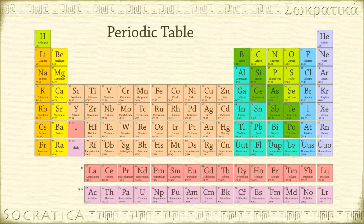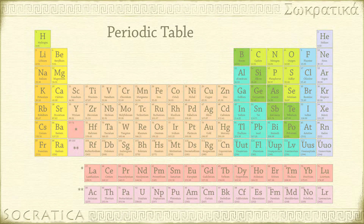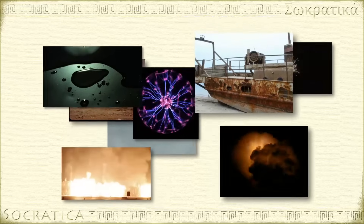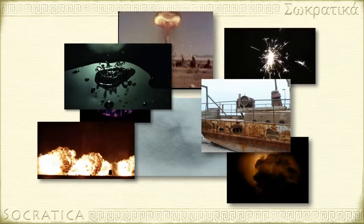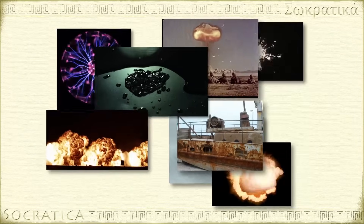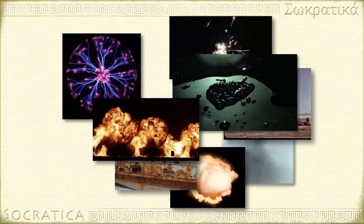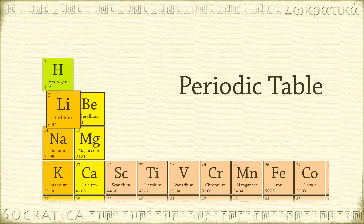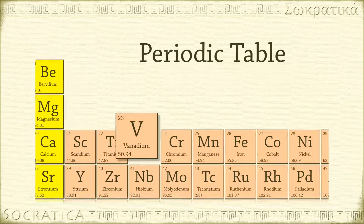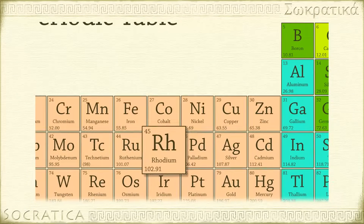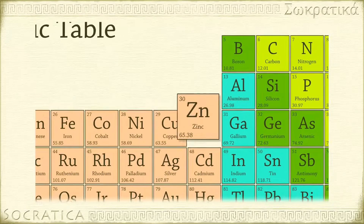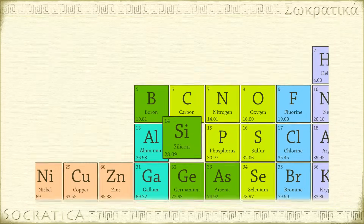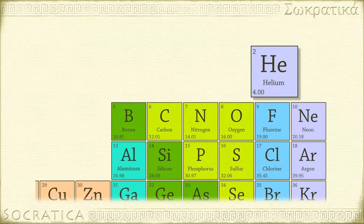The periodic table is the most powerful tool chemists have for organizing chemical information. Without it, chemistry would be a chaotic, confusing jumble of seemingly random observations. What makes the periodic table really invaluable is its use as a predictive tool. You can predict a lot about the chemical behavior of an element if you know where it is on the periodic table.